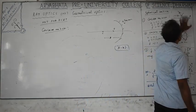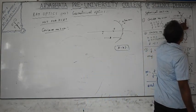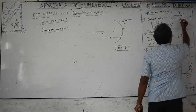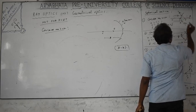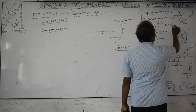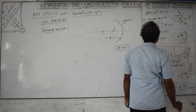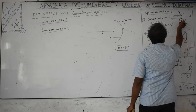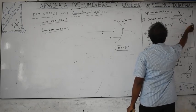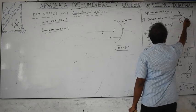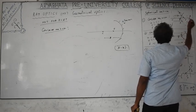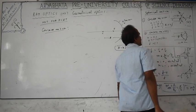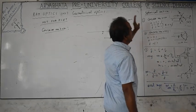For the convex mirror, the focus is behind the mirror, so rays don't really meet there — therefore it is a virtual focus. The image is always formed between the pole of the mirror and the focus. For all spherical mirrors, R equals 2f. Sign convention: the pole is at the origin; left side is negative, right side is positive. Object distance u is on the left (negative); image distance v on the right is positive.